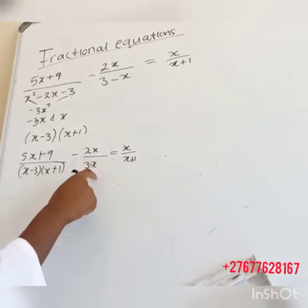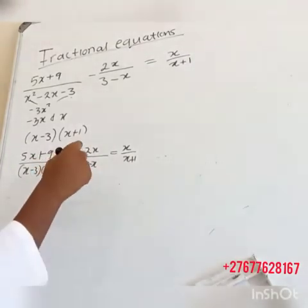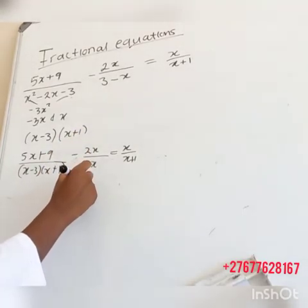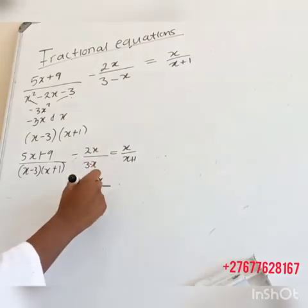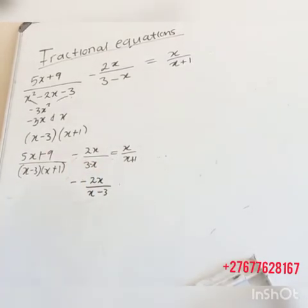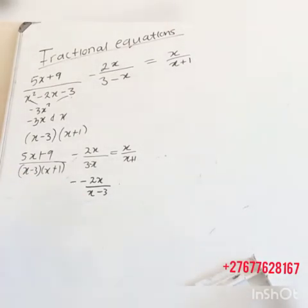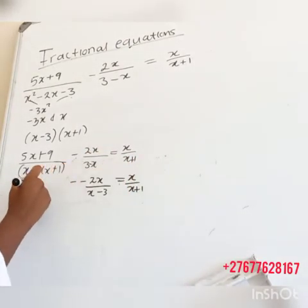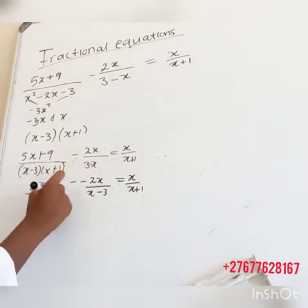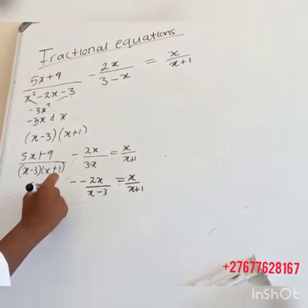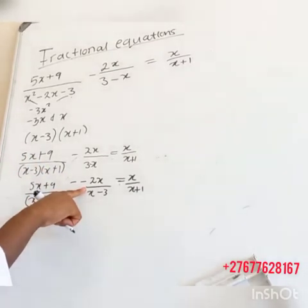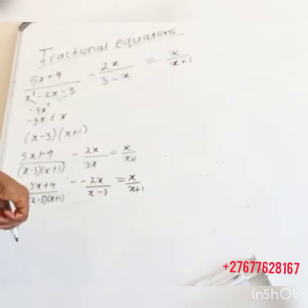So what we are going to do is multiply this second fraction by a negative. When we multiply it by a negative, we are going to end up getting minus minus 2x over x minus 3 — it will become x minus 3. So minus and a minus give us a positive 2x over x minus 3.